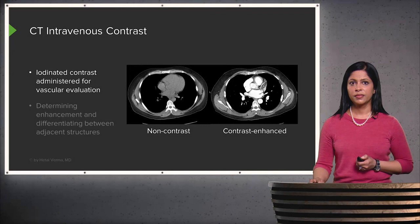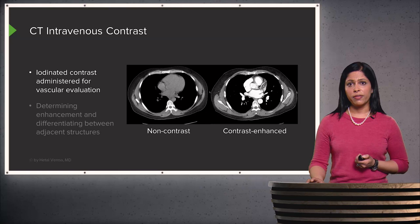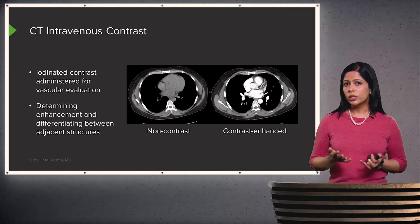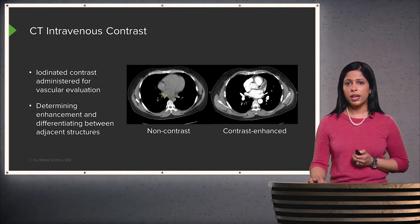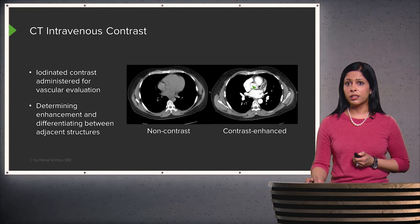CTs can be performed with or without intravenous contrast. Contrast is an iodinated solution administered for vascular evaluation or any structures that contain vascularity. It's helpful in determining enhancement and differentiating between adjacent structures. On this non-contrast image of the chest, the heart is of equal density throughout and it's difficult to identify the different chambers. However, on this contrast-enhanced examination at the same level, we can now identify the different chambers of the heart very easily, because the walls between chambers differentiate contrast-filled structures from those that don't fill with contrast.